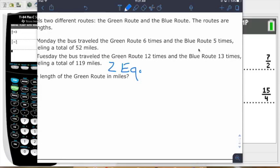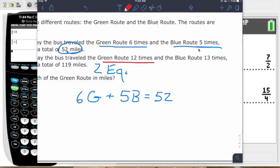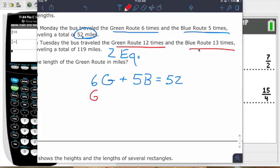We're going to use substitution or elimination to solve those two equations. We have the green route that we're trying to find, and also the blue route distance that's unknown. Here's what we'll do. We'll look at this first situation. Green route, he did that six times. Blue route was five times. So we're going to say six times G for the green route. He did the blue route five times, so we'll put 5B. That total number of miles was 52 miles. Whenever I see a total, you need to think of a sum. This other situation, he goes green route 12 times and blue route 13 times. So 12G plus 13B equals 119.